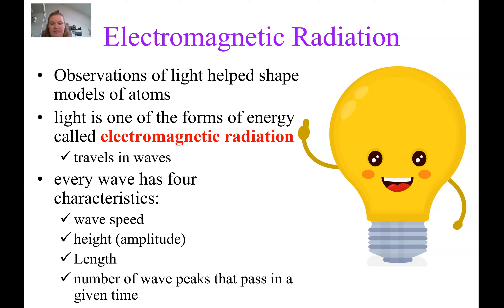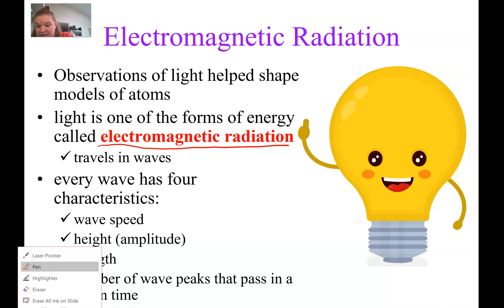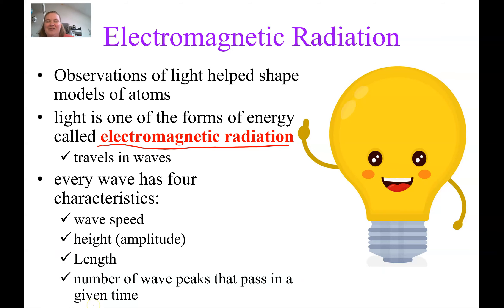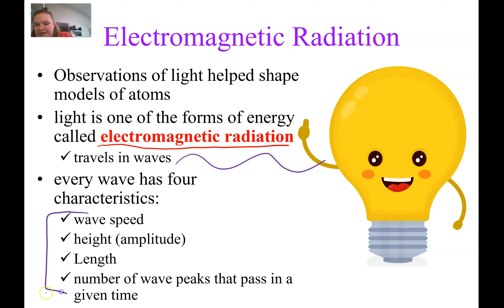Light is a type of electromagnetic radiation. Electromagnetic radiation incorporates all different types of light. We often talk about light we can see, but there are a lot of other types we'll see in a couple slides. Light travels in a wave, and when we talk about a wave, we have four different characteristics to describe it: wave speed, the height of the wave or the amplitude, the wavelength, and the number of wave peaks that pass in a given amount of time.